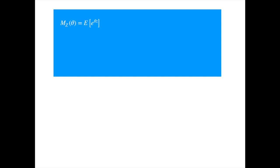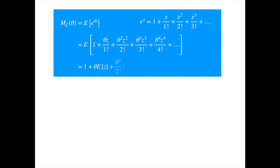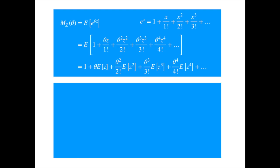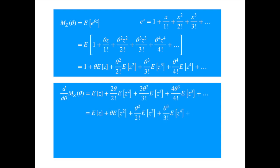Now to see how this simple transformation enables us to compute the moments, let's recall the expansion of the exponential of a variable x. Applying this to theta times z, and using the linear property of the expectation, we get a representation that enables us to calculate any moment of the variable. To isolate the first moment, we differentiate both sides of the equation once. Now every term other than the first has theta, so if we set theta equal to zero, then the first moment is isolated.